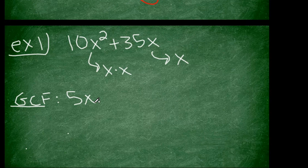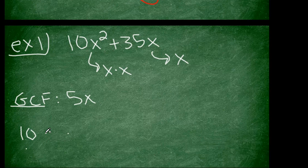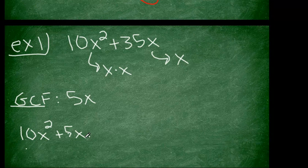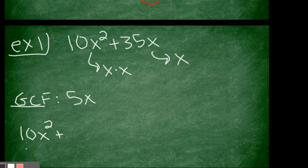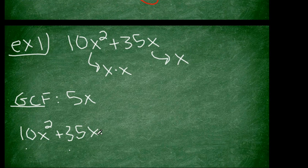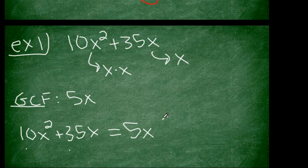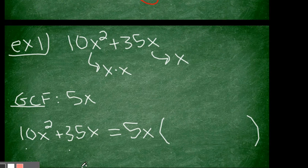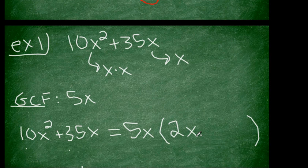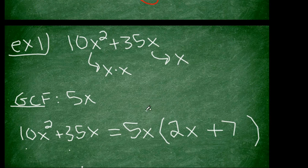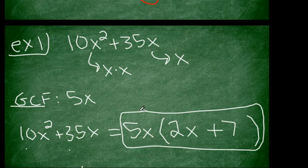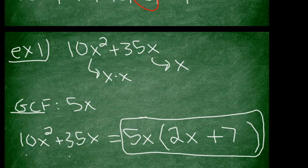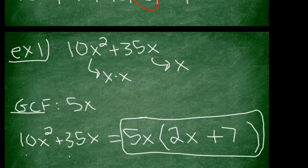Now normally, you wouldn't just stop there. Normally, what you would do is you would actually take it a step further and factor out, which is basically just like division. So if I have this and I factor out a 5x, what am I left with inside? Well, if I do 10 divided by 5 is 2, x squared divided by x is x. So here I have 2x. And then if I do 35x divided by 5x is 7. So this would be my final answer. And it's always nice because you can always go back and check. 5x times 2x is 10x squared, 5x times 7 is 35x, so we're good. So there's our first example of greatest common factor.